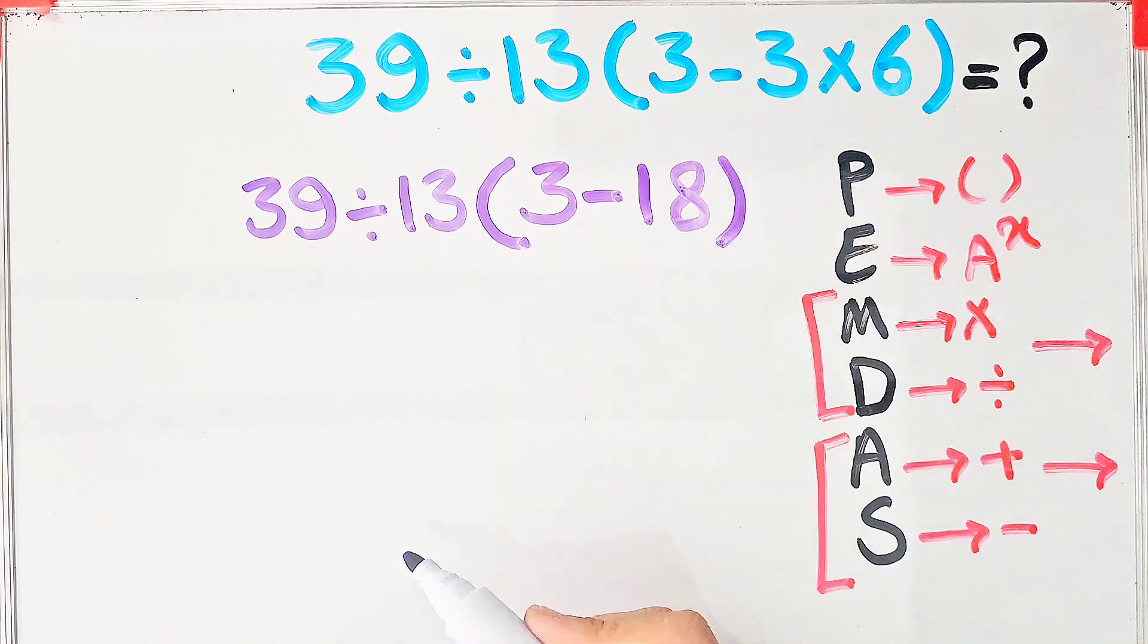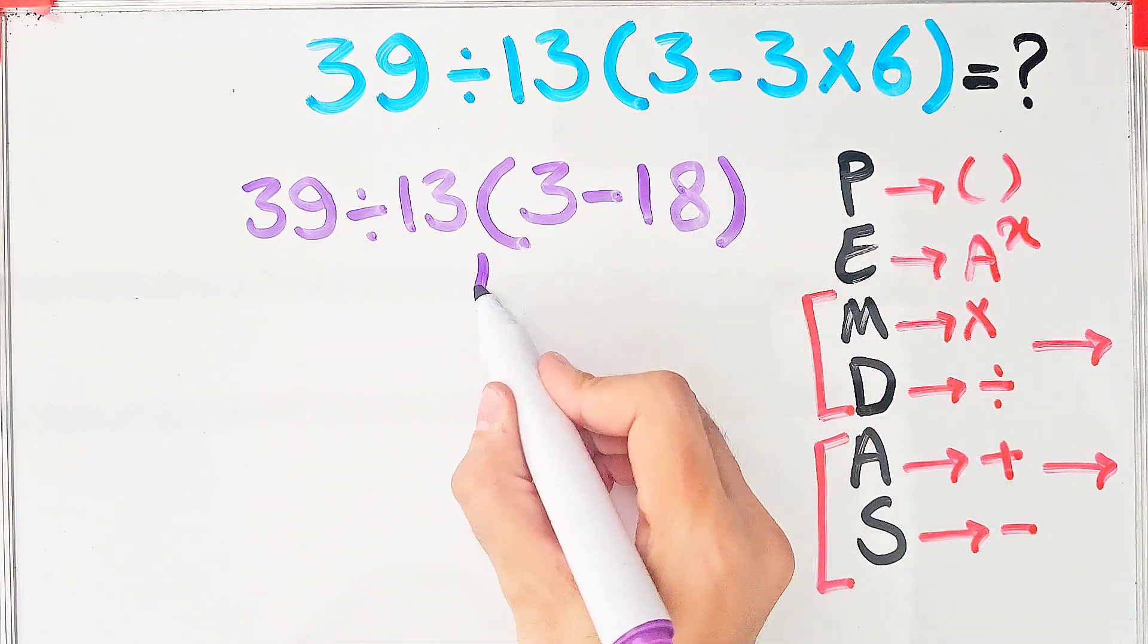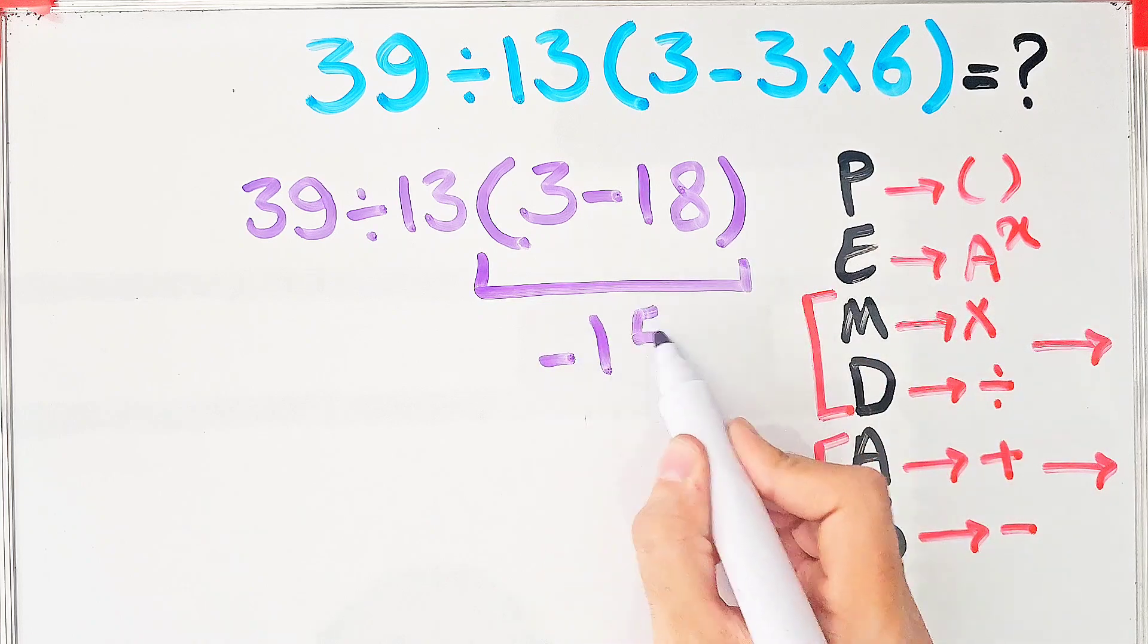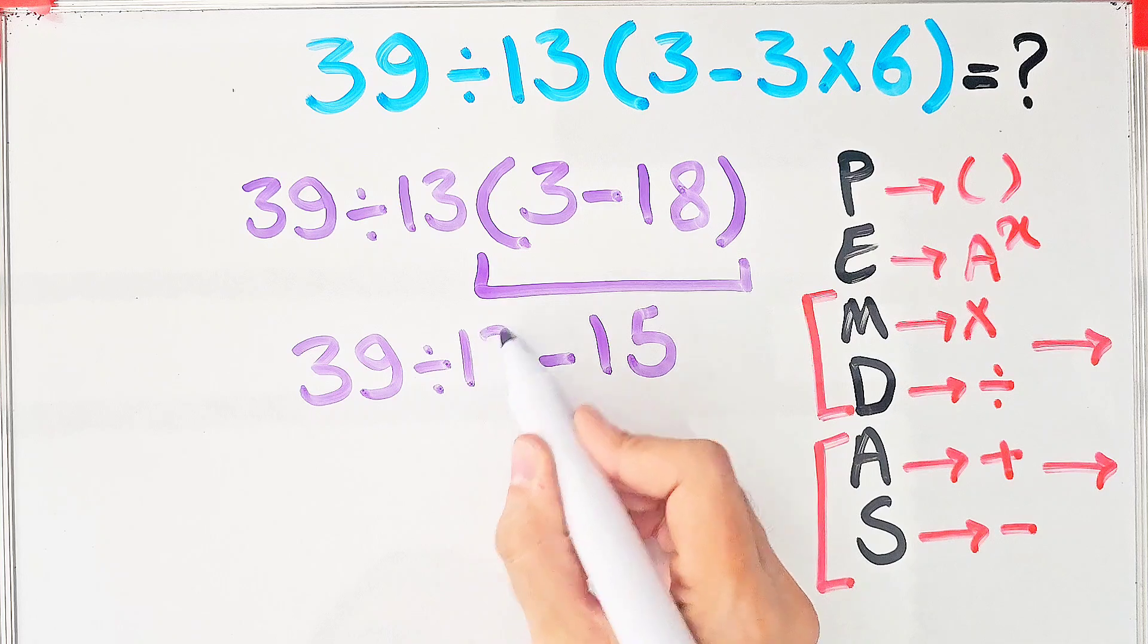Again, we simplify the parentheses. 3 minus 18 equals negative 15. Now, the question is 39 divided by 13, then times negative 15.